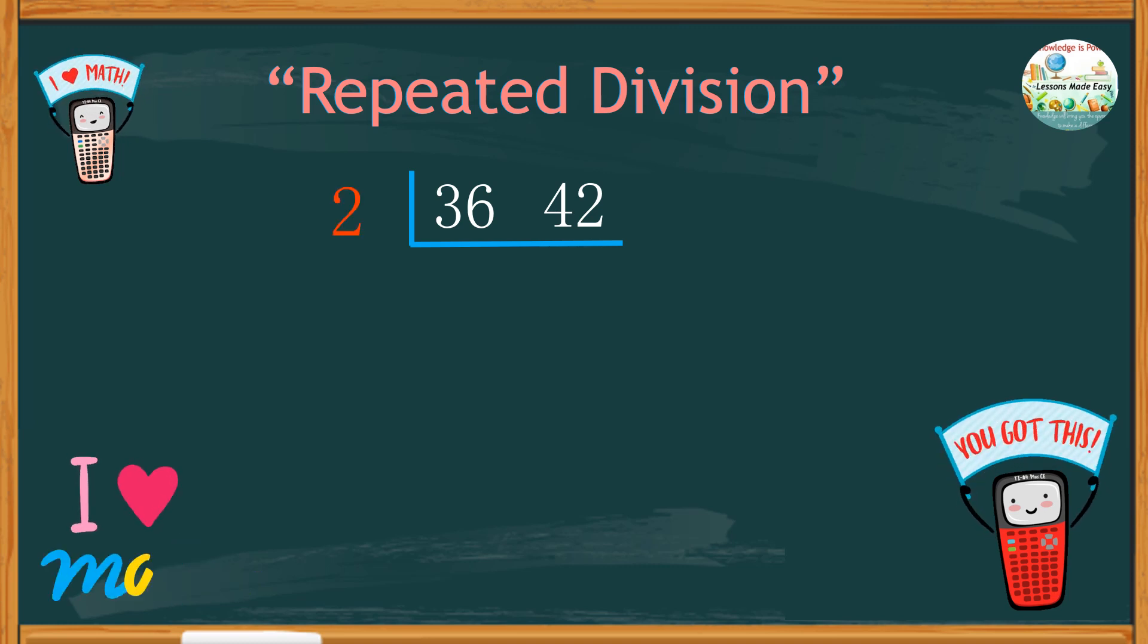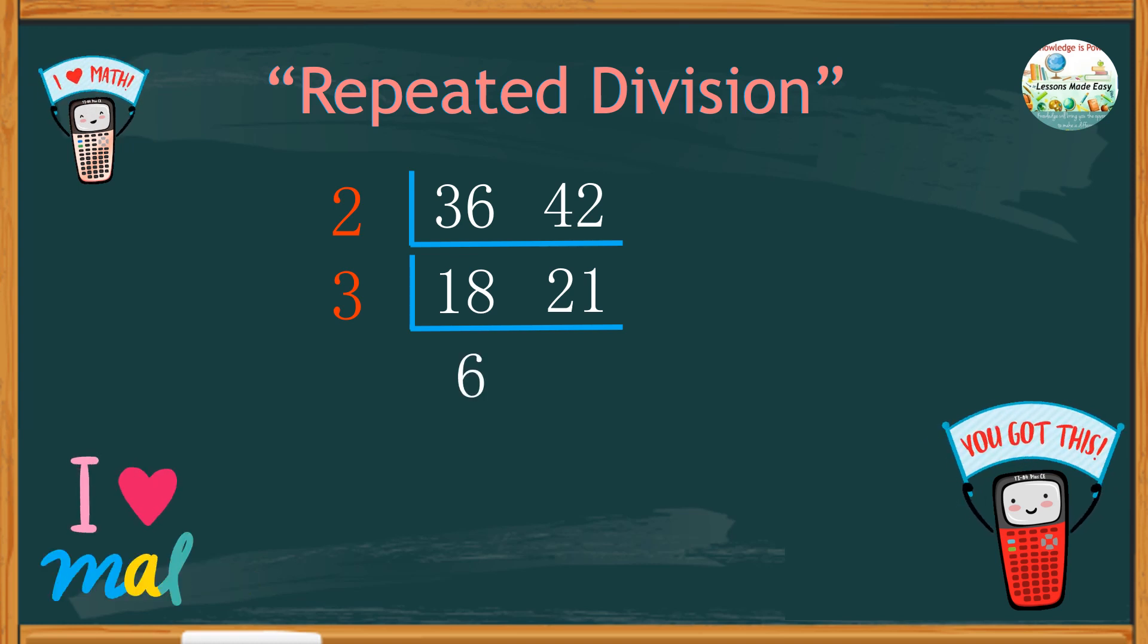With 36 and 42, we can divide by 2 since both numbers are even numbers. Taking half of 36, we get 18. And half of 42, we get 21. 18 and 21 can still be divided further. We can use 3. 18 divided by 3, we get 6. And 21 divided by 3, we get 7. However, there is no common number we can use to divide 6 and 7 that would give us an exact answer. It means that 6 and 7 have no common divisor and therefore you need to stop dividing.